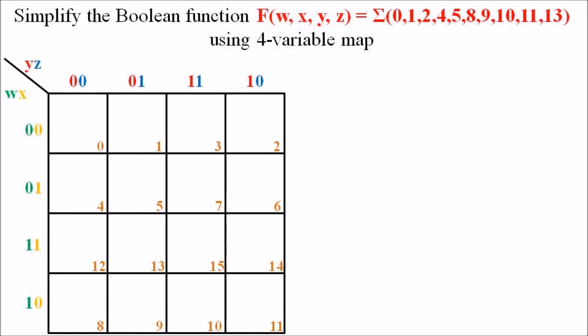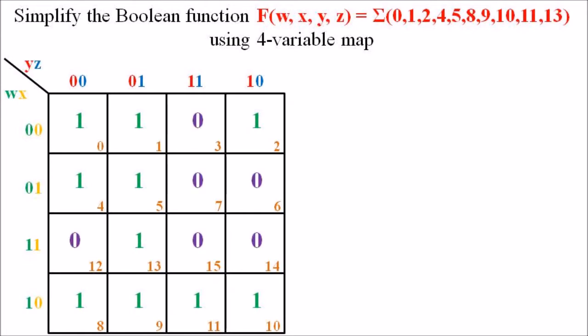As per the question, we mark 1 on the positions 0, 1, 2, 4, 5, 8, 9, 10, 11, and 13. All remaining positions are marked with 0 — that is, cells 3, 7, 6, 12, 15, and 14 receive a 0.